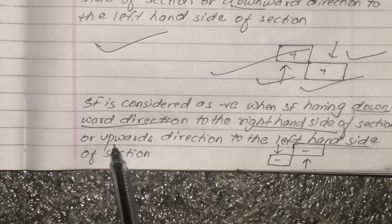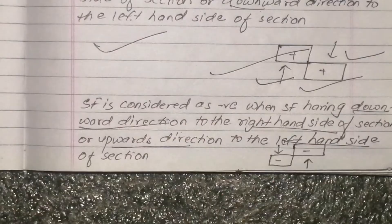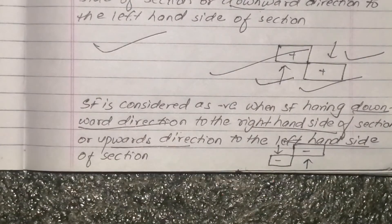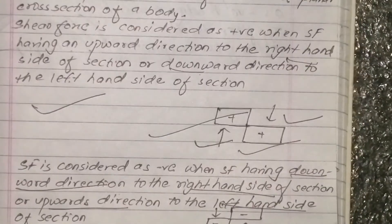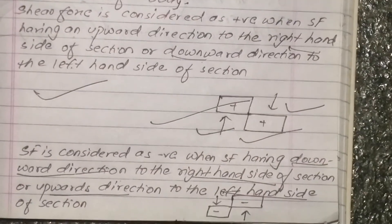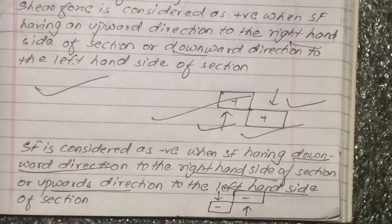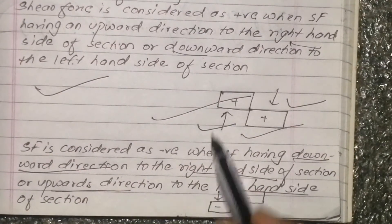Shear force is considered negative when the shear force is having a downward direction on the right-hand side of a section, or an upward direction on the left side of the section.